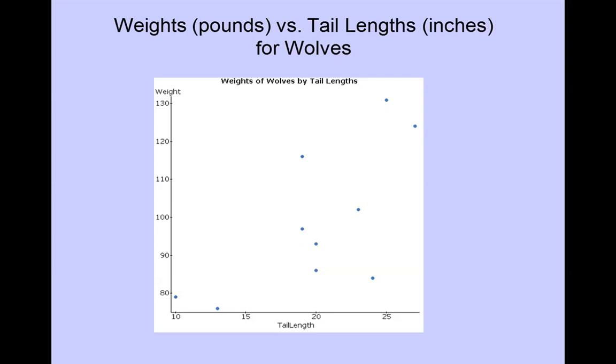You can see that as we move from left to right and tail lengths from about 10 inches to about 25 or 26 inches, the weights tend to be going up from around 76 to 78 pounds up to 125 to 130 pounds.